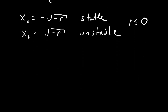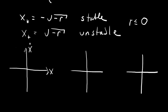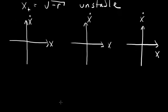Now let's visualize what's going on with this bifurcation. We'll make three graphs, each plotting x-dot versus x. The point is to visualize what's happening with the bifurcation. Remember that x-dot equals r plus x squared.